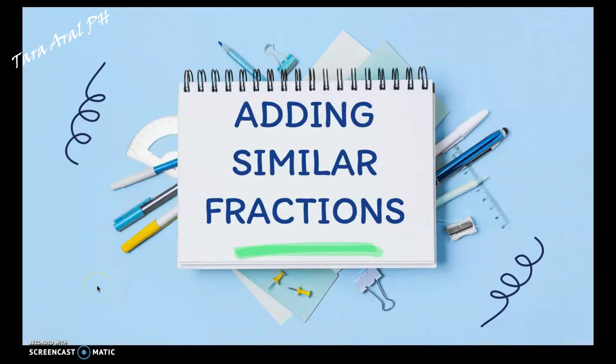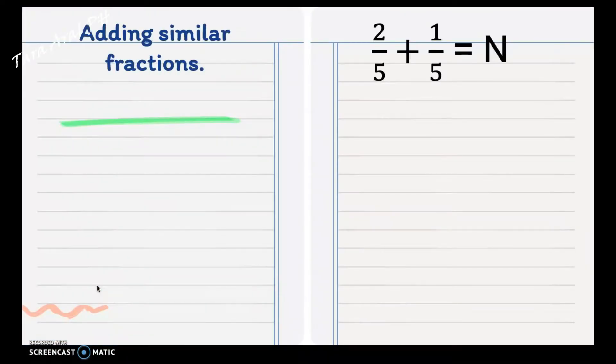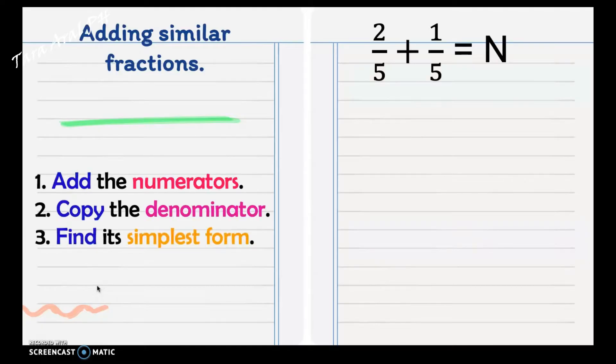Let's add similar fractions. When you say similar fractions, there are fractions that have the same denominators. In adding similar fractions, the steps are: first, you add the numerators, we have 2 plus 1, that is 3. Second step is copy the denominator, which is 5, and find its simplest form. So, 3 and 5 has no common factor. Therefore, our answer is 3/5.